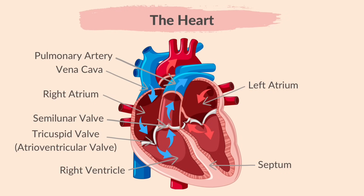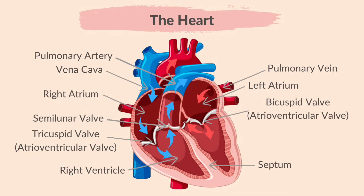This is the left atrium, another one of the heart's four chambers. This is the pulmonary vein — oxygenated, or oxygen-rich, blood returning from the lungs enters the left atrium through this vein. This is the bicuspid valve, an atrioventricular valve which separates the left atrium from the left ventricle and prevents blood from flowing back into the left atrium. Once the left atrium is filled with blood, the heart muscles contract and the blood is pushed through the bicuspid valve into the left ventricle.